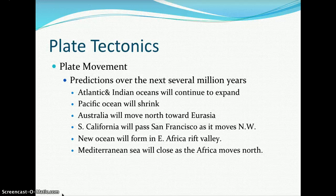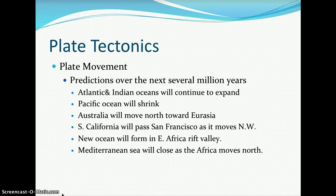Here are predictions over the next several million years. Geologists predict that the Atlantic and Indian Oceans will continue to expand, the Pacific Ocean will shrink, Australia will move north toward Eurasia, Southern California will pass San Francisco as it moves northwest, a new ocean will form in the East Africa Rift Valley, and the Mediterranean Sea will close as the African Plate moves north toward Europe.